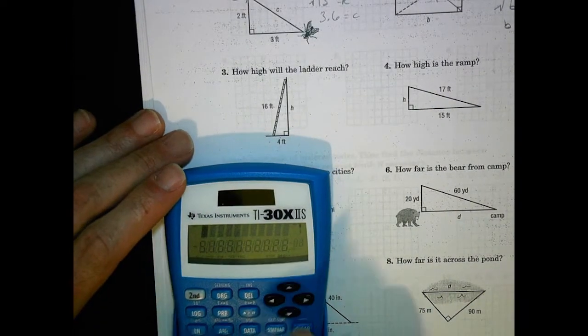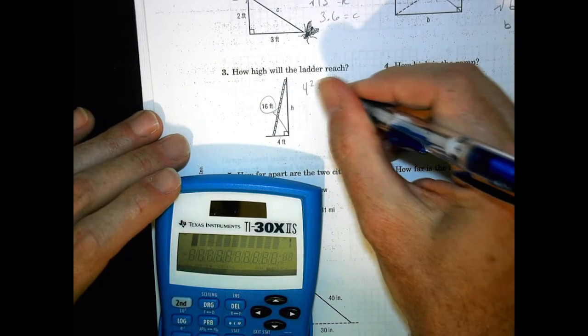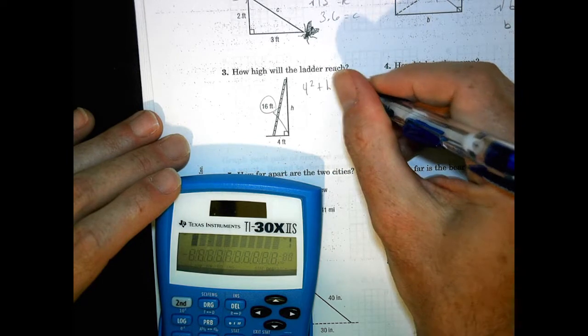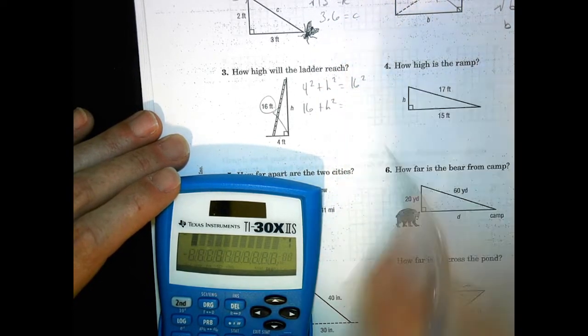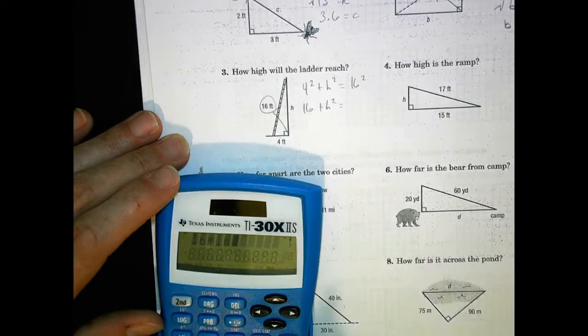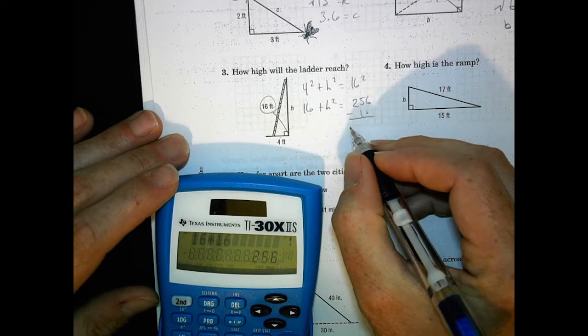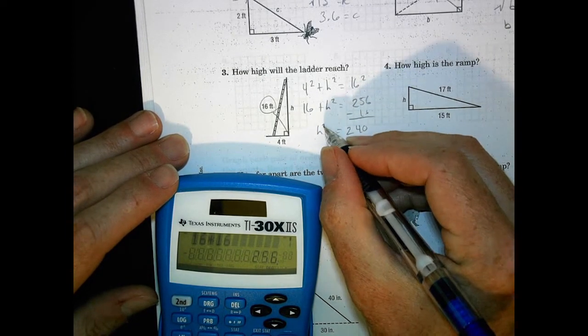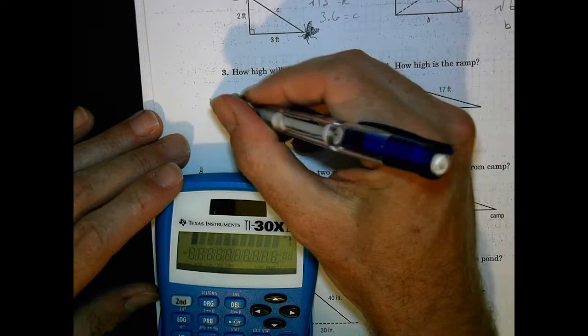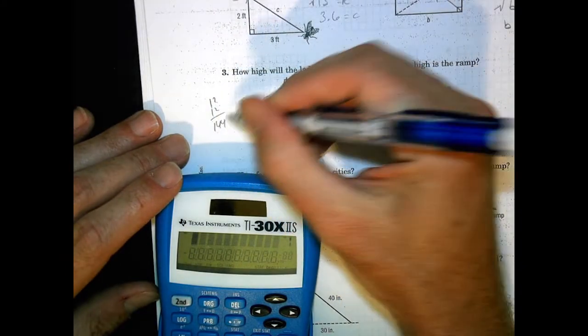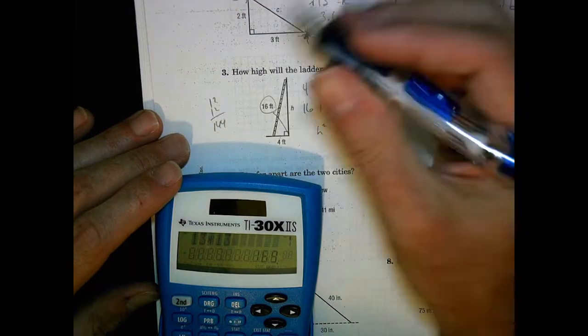Alright. How tall is a ladder going to be? Well, again, we have the c value. So we have 4 squared plus, in this case here, h squared equals 16 squared. So that's 16 plus h squared equals 16 times 16, which is 256. I'm going to subtract 16 from both sides. So I end up with 240 for h squared. And again, if I'm approximating here, if I think about things like 12 times 12 144. Alright. 13 times 13 is 169.